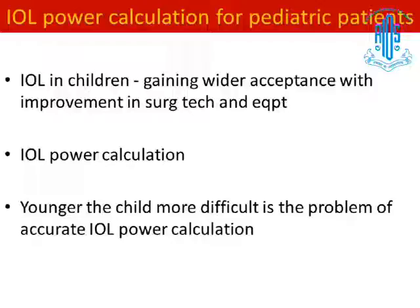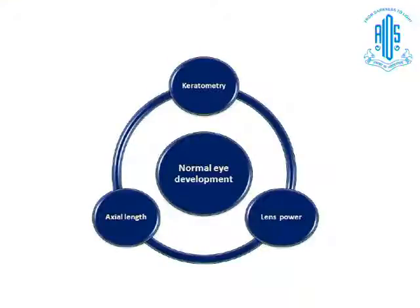The younger the child, the more difficult is the problem of accurate intraocular lens power calculation. During normal eye development, the axial length of the child increases during the first 2 to 3 years of life at a very rapid pace. Keratometry, which is steeper at the time of birth, flattens over the next 6 to 12 months. The lens, which is more spherical, becomes less and less curved, and to some extent compensates for the rapidly increasing axial length.